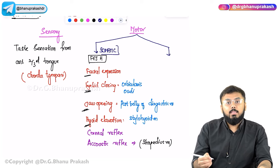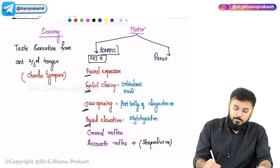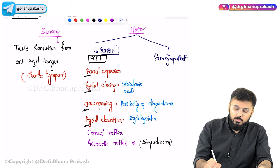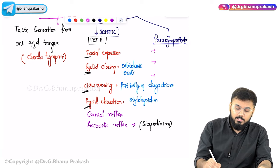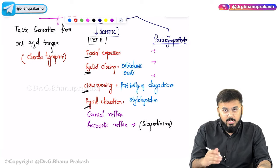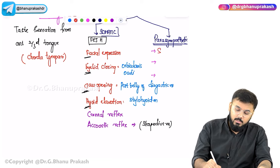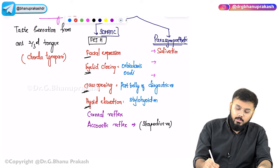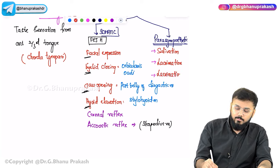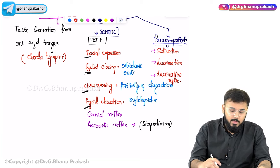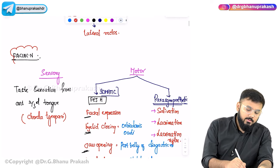The parasympathetic functions of CN VII include three actions: salivation, lacrimation, and the lacrimation reflex.